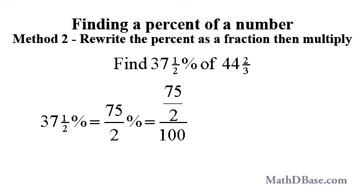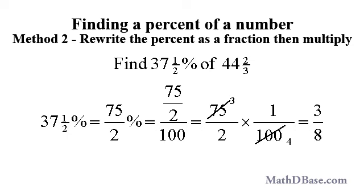Now applying the definition of percent, 75 over 2% is equal to 75 over 2 over 100, which is a complex fraction. We can simplify it by multiplying 75 over 2 by the reciprocal of the denominator, 100 over 1, to get 75 over 2 times 1 over 100. Since 75 and 100 have 25 as their highest common factor, the fractions reduce to 3 over 2 times 1 over 4. Multiplying the reduced factors, we get 3 over 8.